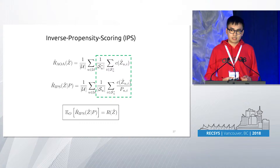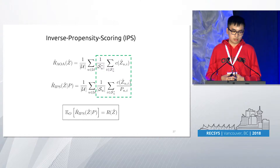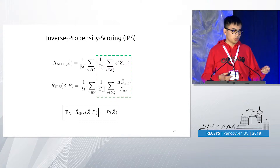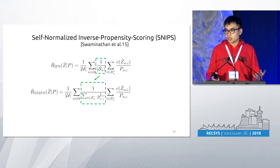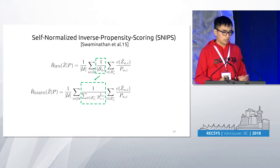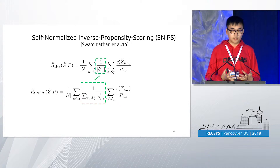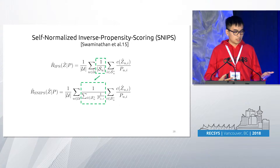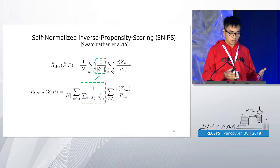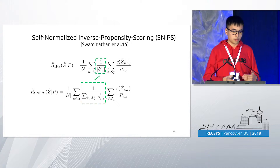However, as you can see, the set SU is still unobservable. Therefore, we further leveraged the self-normalized inverse propensity scoring (SNIPS) technique and used the inverse propensities to substitute the set SU. According to the original paper that proposed these results, this approach can significantly reduce the variance of the estimator. At the same time, this evaluator is consistent and converges to the true expectation value when n is large.